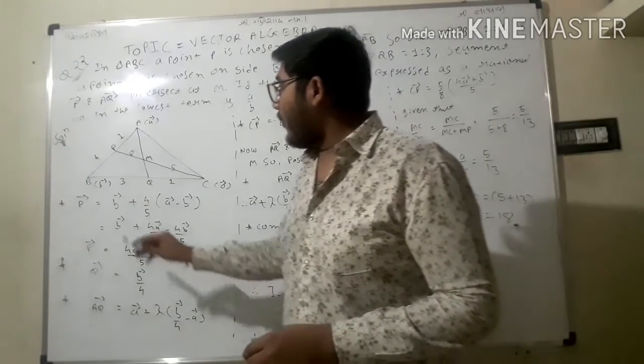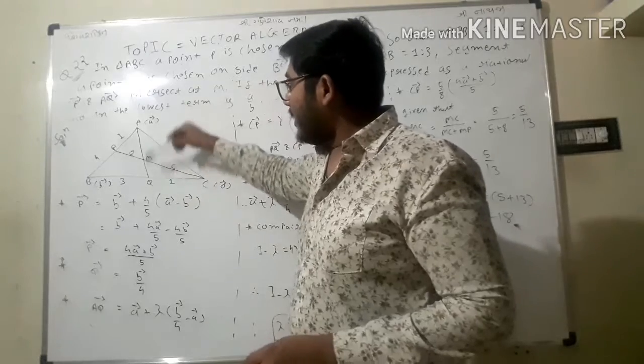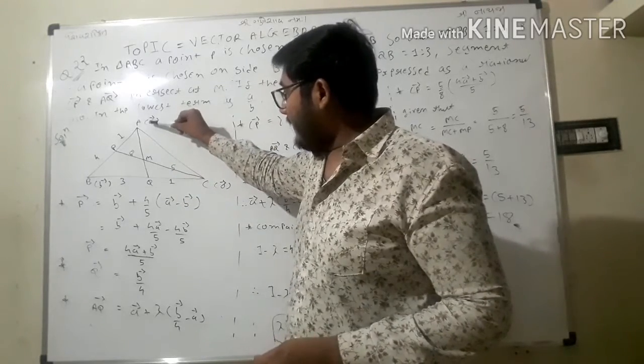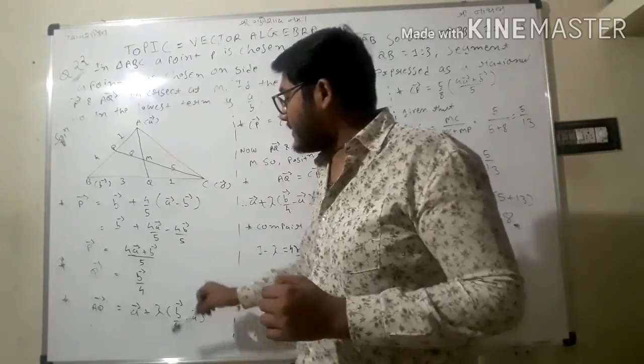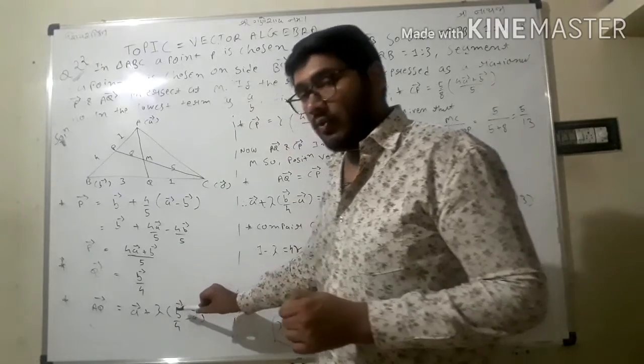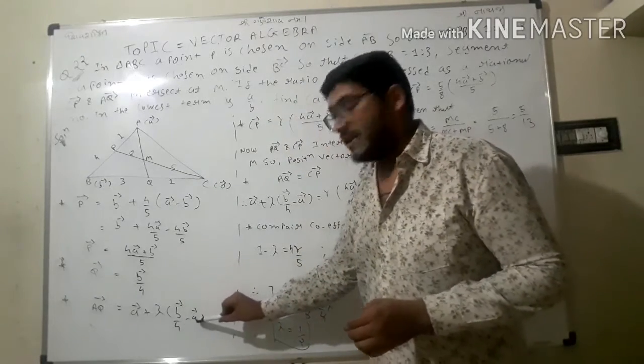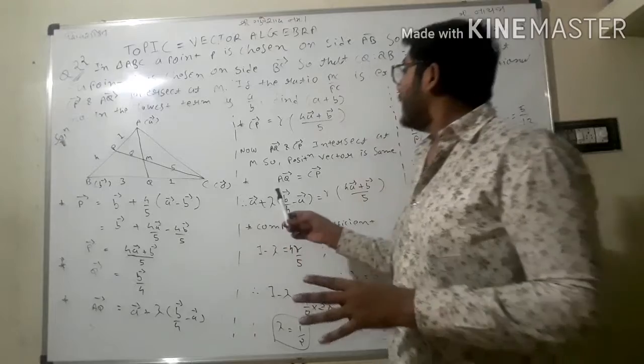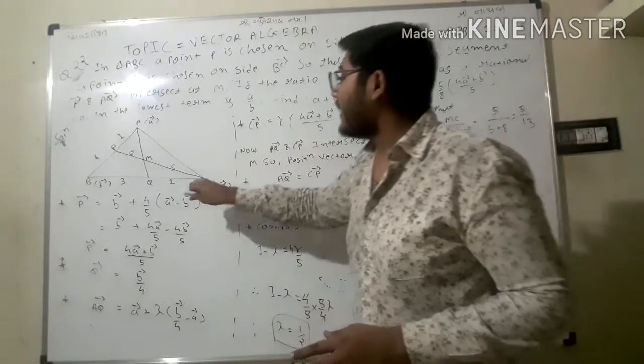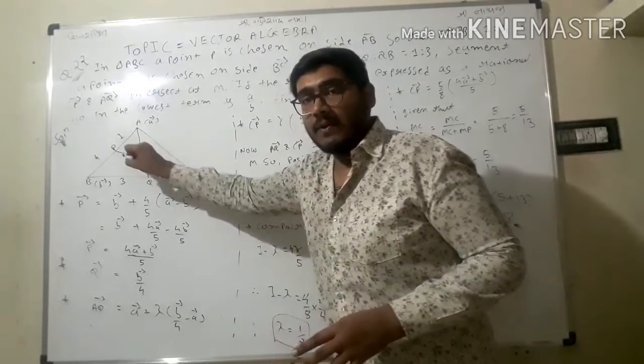Now what is the AQ vector? AQ vector equals a vector plus lambda times (b vector upon 4 minus a vector). Now I will find CP vector.